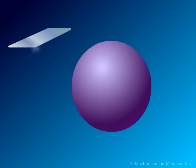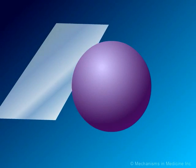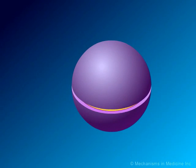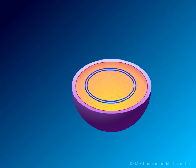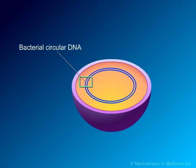In this animation, we demonstrate the biology of DNA replication, leading to bacterial cell division in a gram-positive bacterium, such as S. pneumoniae. The DNA is shown as a circular double strand within the bacterial cell. Like the DNA of all living organisms, it contains the unique genetic code for all of the proteins required for bacterial survival.